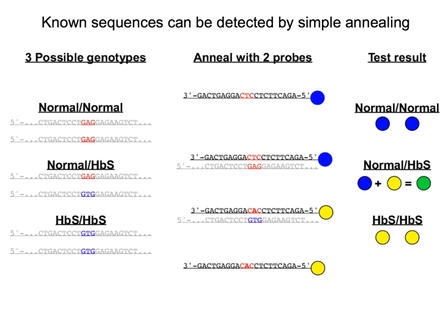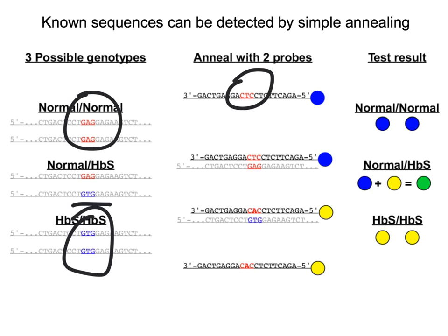Here's an example of how we can use this annealing-based probe approach to determine the genotype of a person. In this particular case, we're interested in knowing whether a person has two normal copies of the hemoglobin B gene, whether they have one normal copy and one hemoglobin S allele, or whether they are homozygous for that mutation and therefore have sickle cell disease. We can distinguish all three possibilities by annealing a sample of DNA with two probes. One, labeled in blue, is anti-parallel and complementary to the normal hemoglobin B gene. The other, labeled in yellow, is anti-parallel and complementary to the hemoglobin S allele.